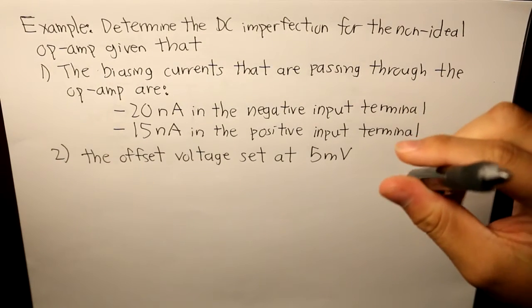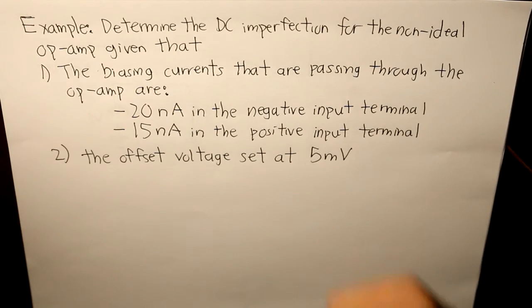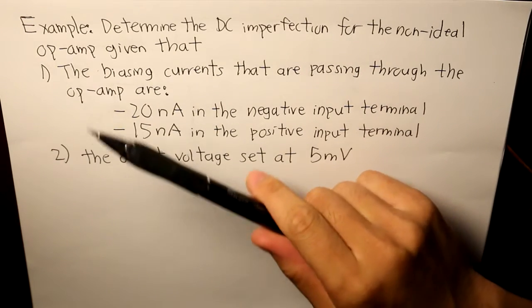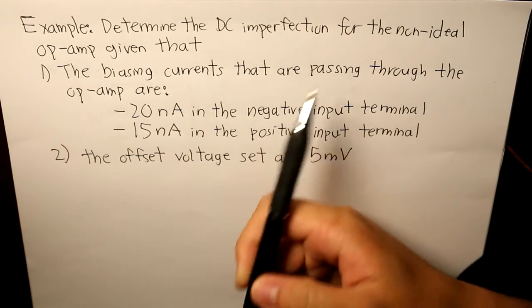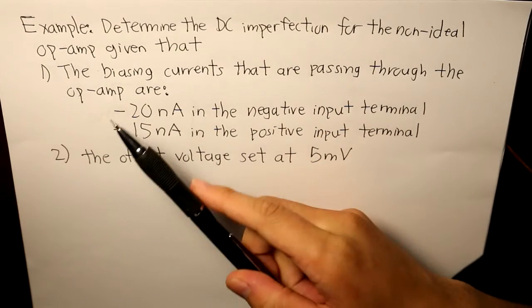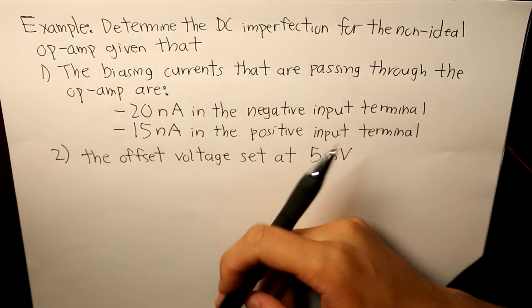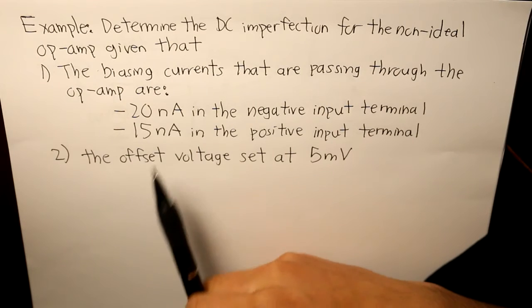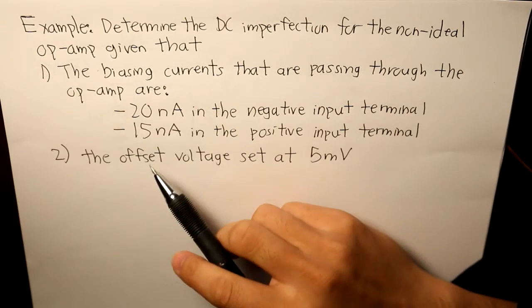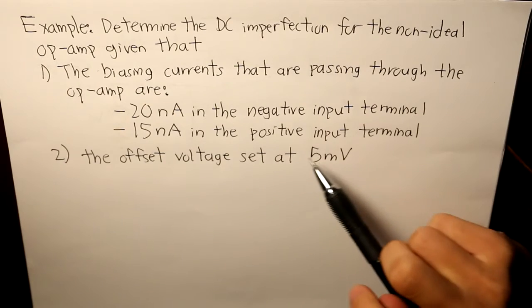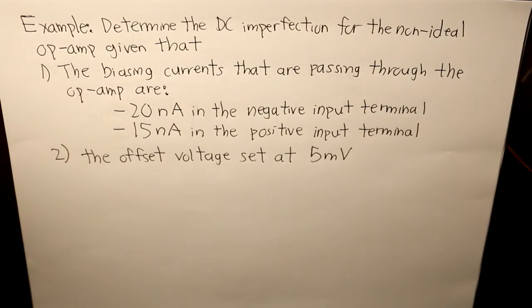Hello everybody. In this video I am giving a practical example of DC imperfection. The question is: determine the DC imperfection for the non-ideal op amp given that the biasing currents passing through the op amp are 20 nanoamps in the negative input terminal, 15 nanoamps in the positive input terminal, and the offset voltage set at 5 millivolts.